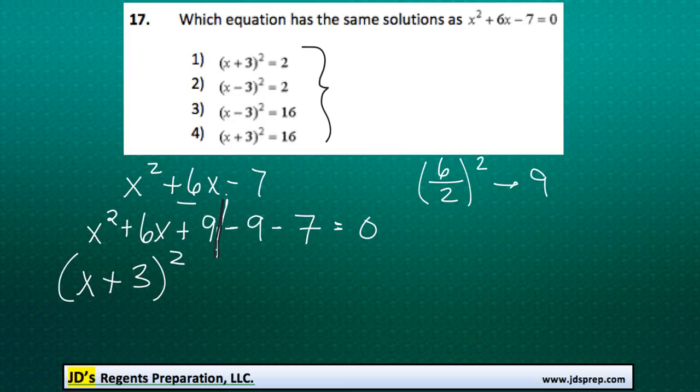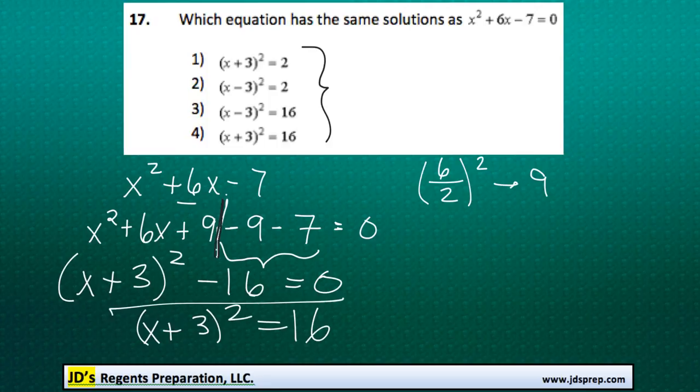And then we can combine this negative 9 minus 7 together to get minus 16. And then finally, we can add 16 to both sides, and we get x plus 3 squared equals 16, which is our answer number 4.